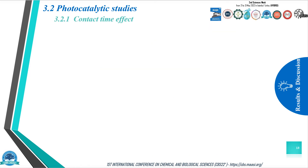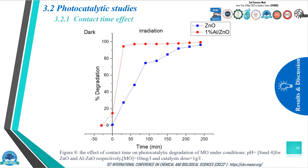We pass to the contact time effect. The influence was investigated under optimum conditions of pH 4 and 8, and methyl orange concentration of 10 milligrams per liter, as presented in Figure 8. The degradation efficiency increases proportionally with irradiation time. The degradation rate reached its maximum after 180 minutes for zinc oxide and after 50 minutes for aluminum-doped zinc oxide.